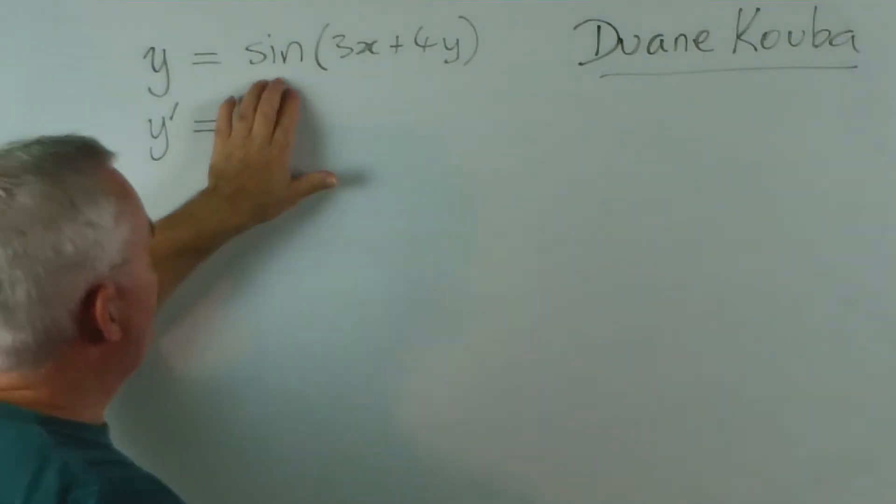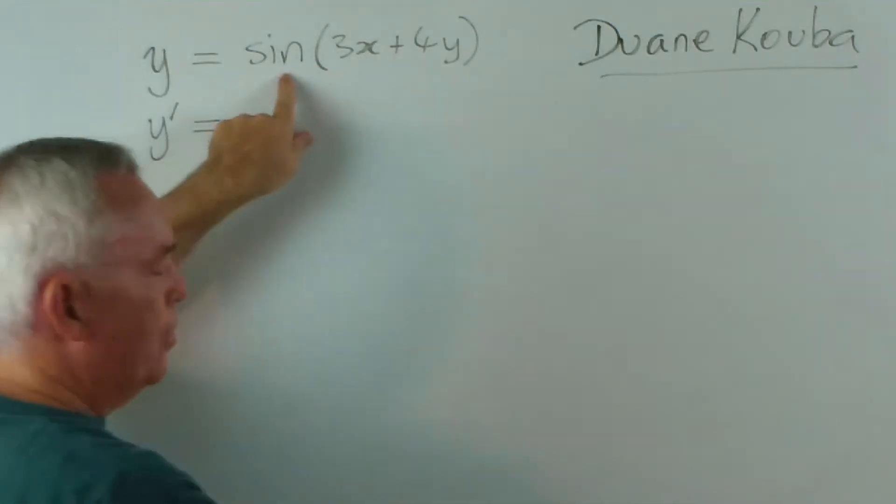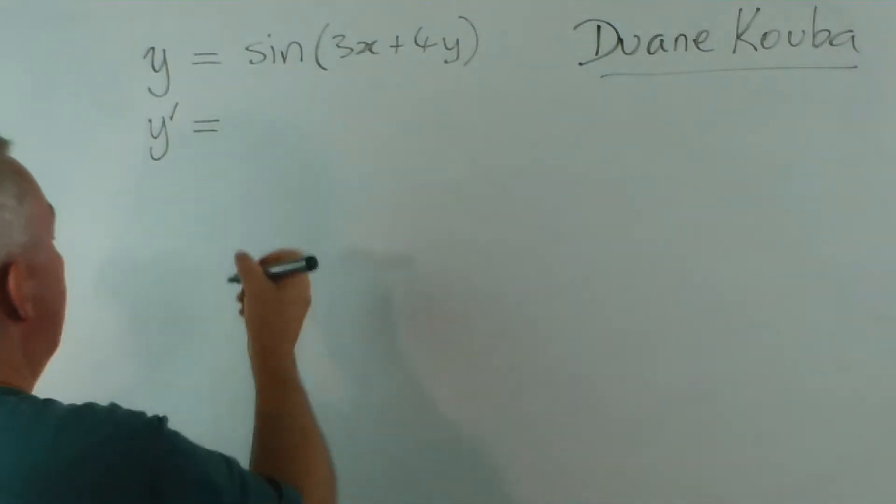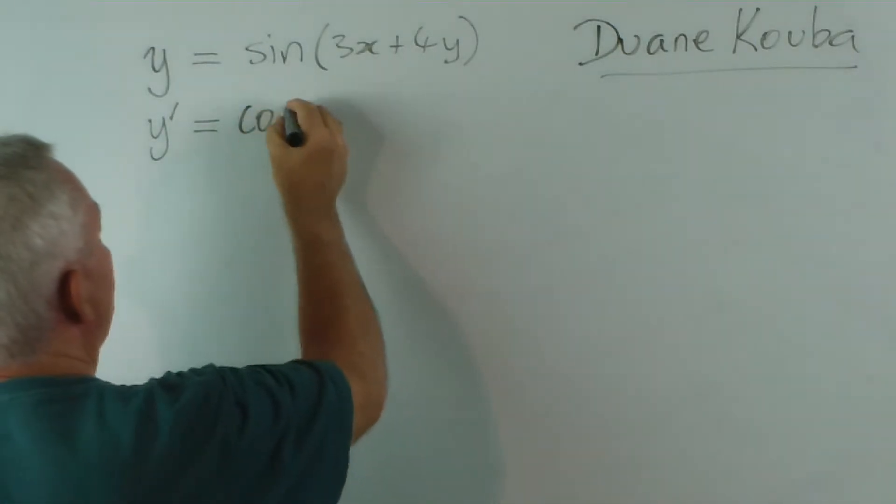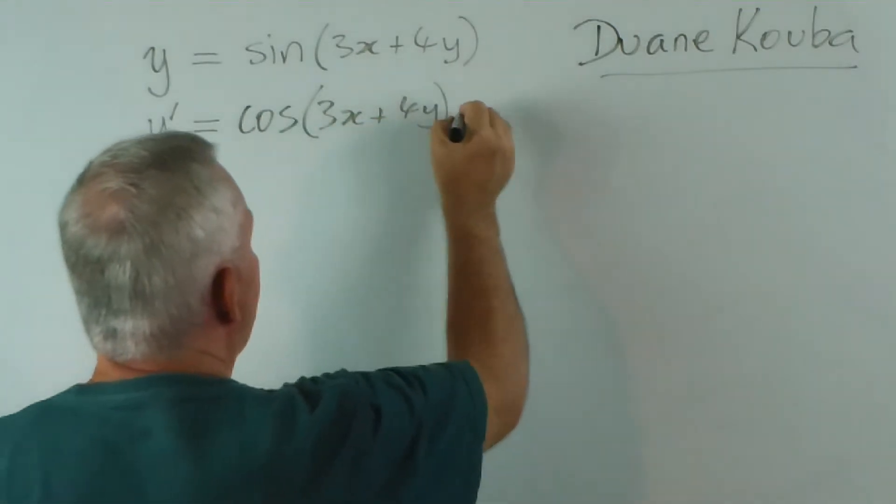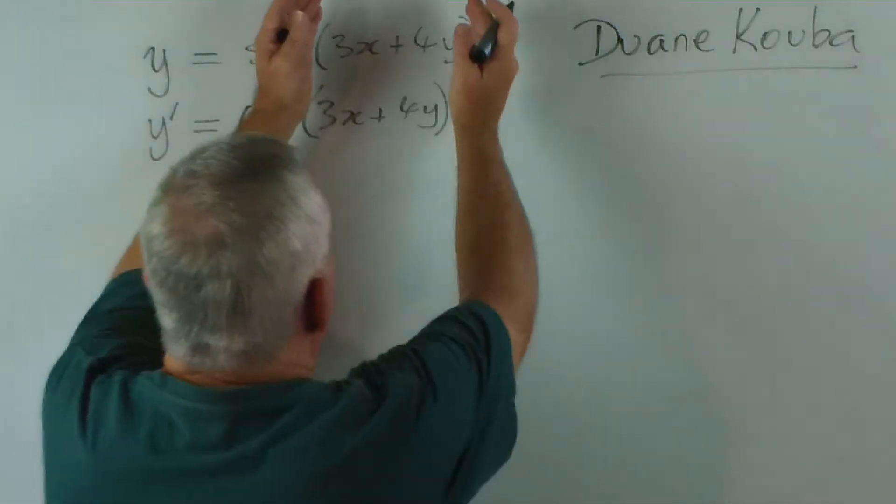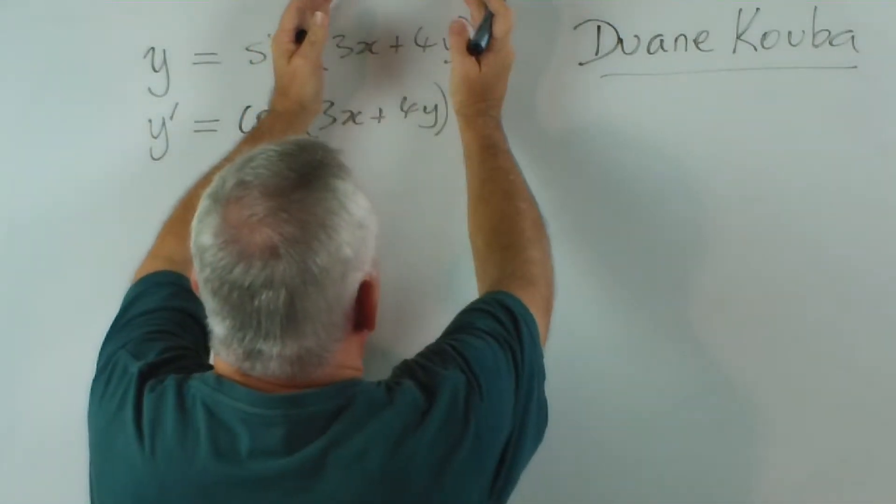Here we have a chain, that is, a function inside another function. So let's deal with the sine first. What's the derivative of sine? It's cosine of whatever's inside times the derivative of what's inside. Now, what's the derivative of 3x plus 4y?